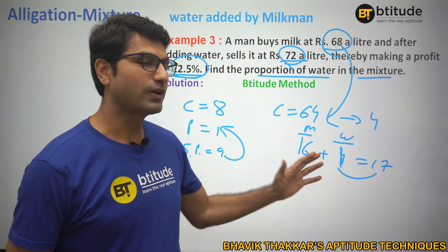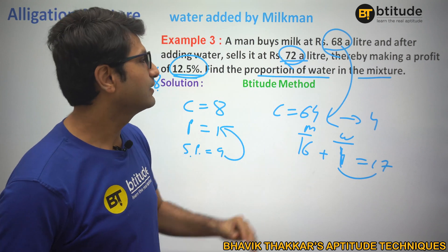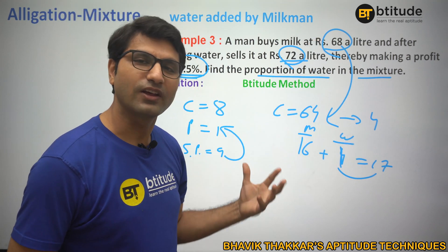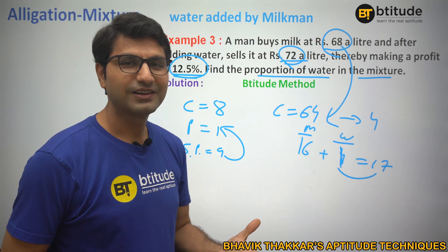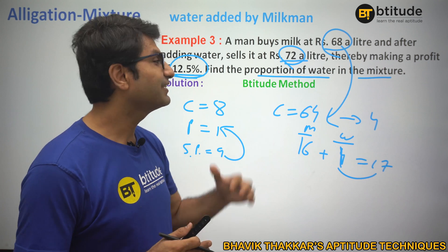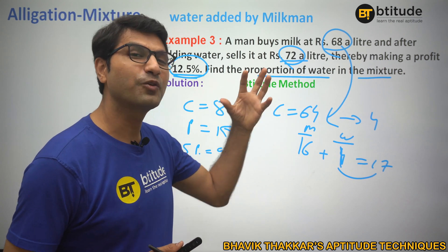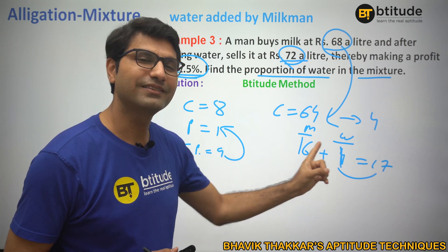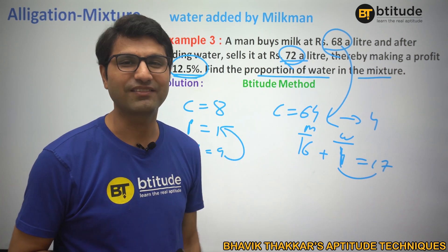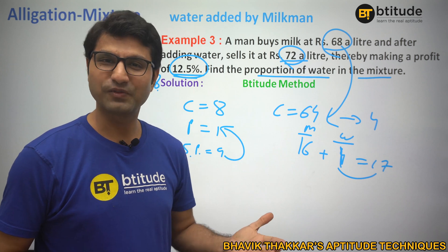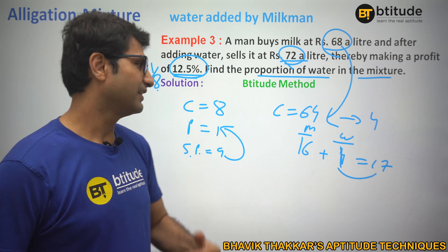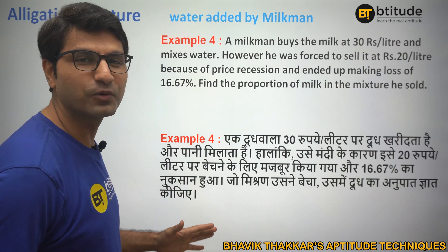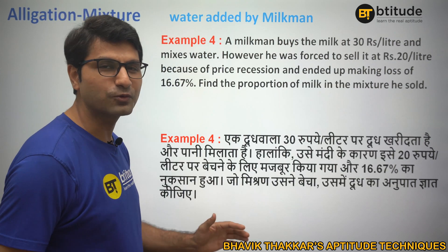To summarize the shortcut: 1 part water has to be mixed per 16 parts milk, but if the question asks what fraction of the mixture is water, then the answer is 1/17. Always read carefully what the question is asking.